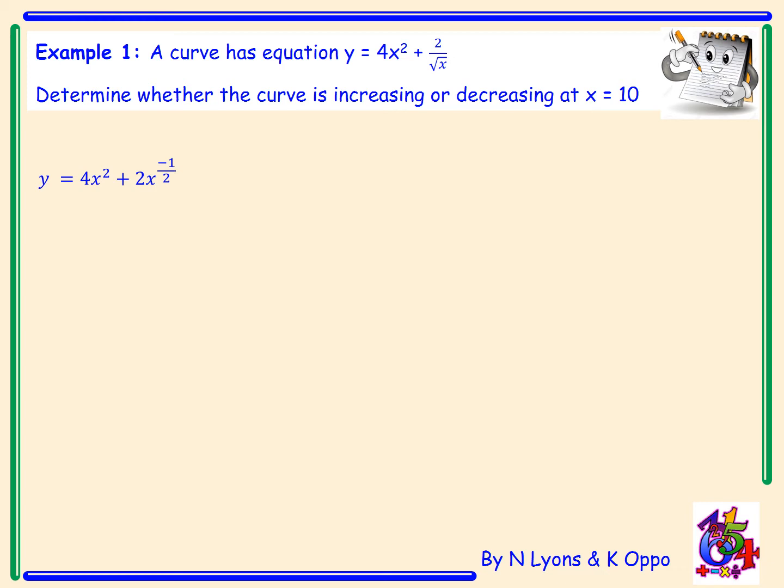First of all, we need to prepare the curve's equation in order to differentiate. So root x can be rewritten as x to the power of a half, and then bringing it up from the bottom of the fraction to beside the number 2 will give us x to the power minus one half.